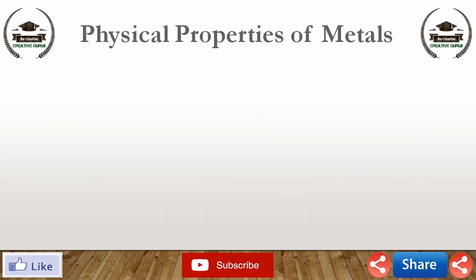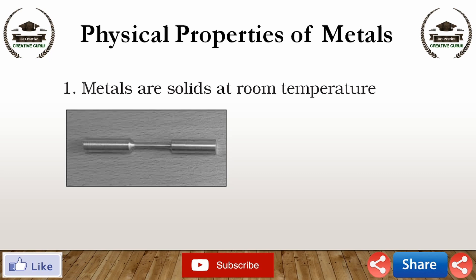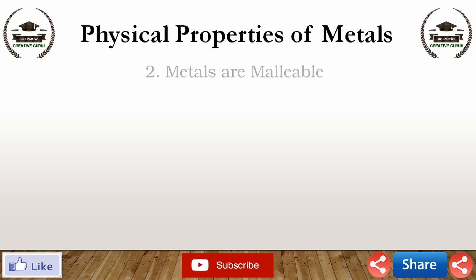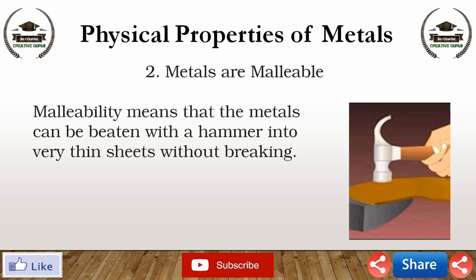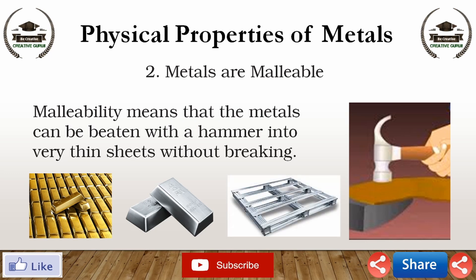We will discuss the physical properties of metals. First, metals are solids at room temperature — all metals are solid at room temperature except mercury, which is a liquid. Second, metals are malleable. Malleability means that metals can be beaten with a hammer into very thin sheets without breaking. Gold and silver are among the best malleable metals. Aluminium and copper are also highly malleable metals.